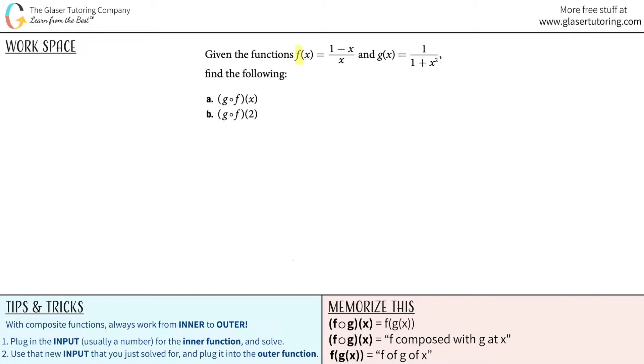Given the following functions f of x equals 1 minus x over x and g of x equals 1 over 1 plus x squared, we want to find the following, and then we have a and b.